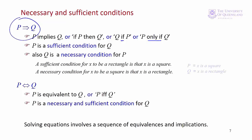For one more example, let's look at squares and rectangles. So let P be the statement X is a square, Q is the statement X is a rectangle. So if X is a square, that's a sufficient condition for it to be a rectangle. A necessary condition for X to be a square is that it's a rectangle.